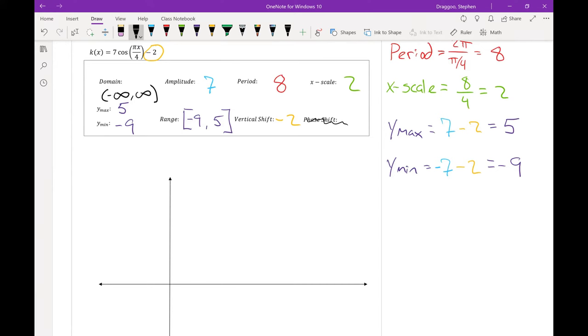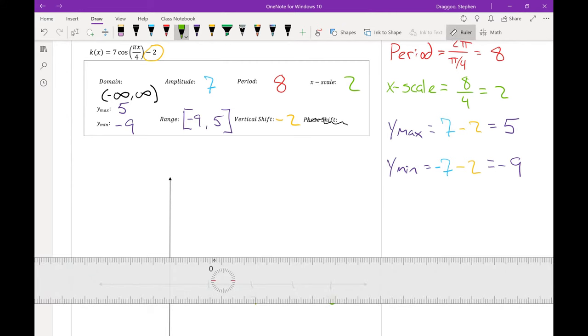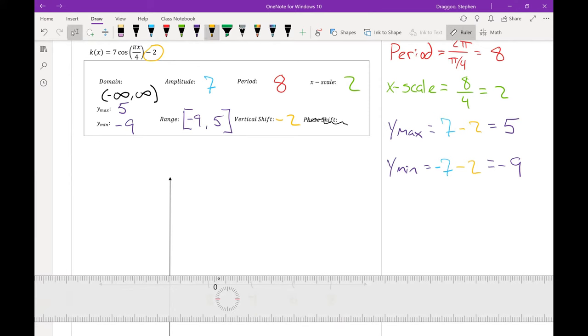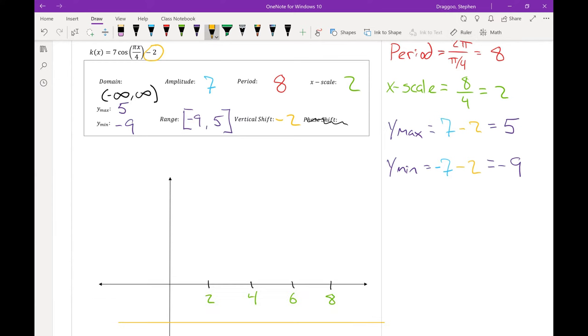We'll mark off 4 tick marks along the x axis. Where I will count by my x scale. 2, 4, 6, 8. I'll put down a line for my vertical shift at negative 2. And then mark off spots for my maximum and my minimum values.